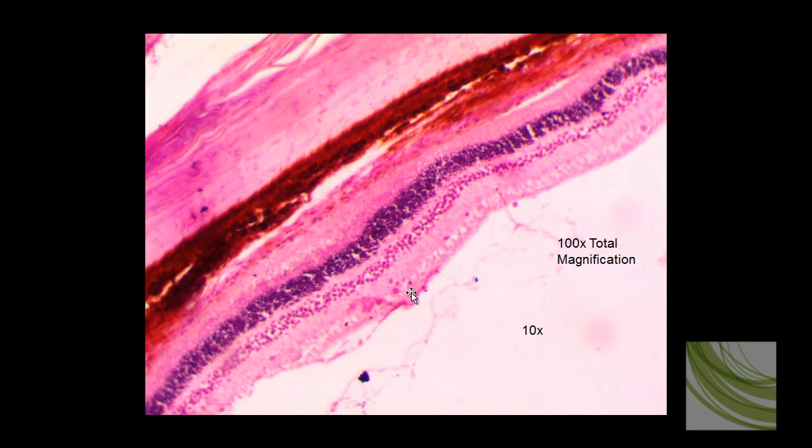And the last thing we'll look at is this slide of the retina of the back of a cat eyeball using the 10x objective. 10x objective times the 10x ocular means that this picture is 100 times larger than it actually is.